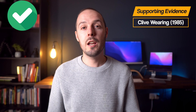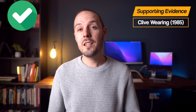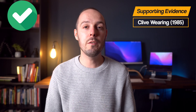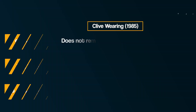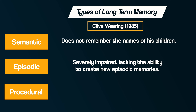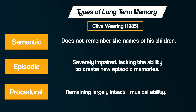However, interestingly, Clive Wearing's procedural memory is fine, maintaining his ability to perform complex piano pieces. Just like HM, the case of Clive Wearing provides further evidence for the existence of different types of long-term memory — his episodic memory severely impaired, lacking the ability to create new episodic long-term memories, but his procedural memories remaining largely intact.